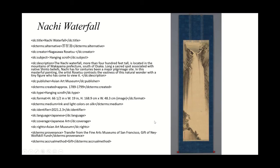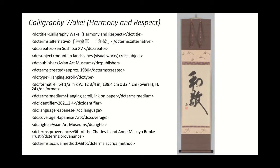This is just for my project to have the experience of experimenting with the cataloging. Finally, we have a calligraphy piece, 'Wakei — Harmony and Respect,' with the creator Sen Soushitsu the 15th. We have the dimensions, the medium, identifier, language, coverage, rights, and this one is also a gift.